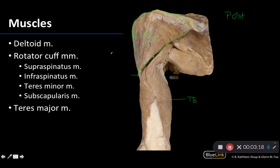Now let's see which rotator cuff muscles we can identify in this posterior view. I always go back to the scapular spine to get organized. Superior to the scapular spine is the supraspinatus — its muscle belly sits right within the supraspinous fossa as its proximal attachment, and it makes its way to the greater tubercle for its distal attachment.